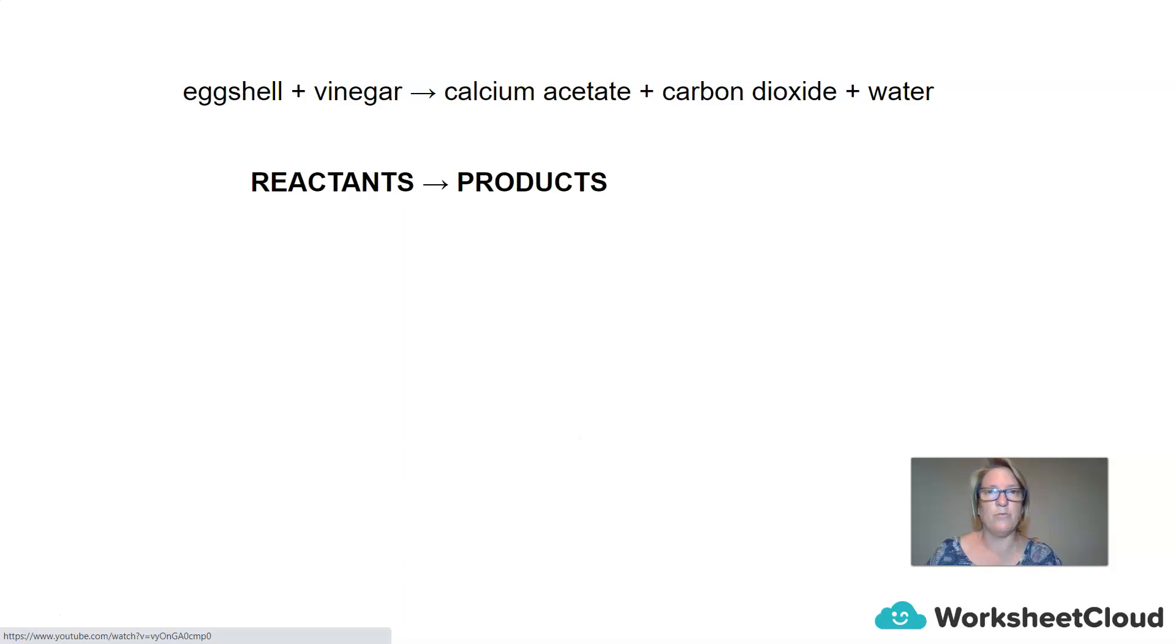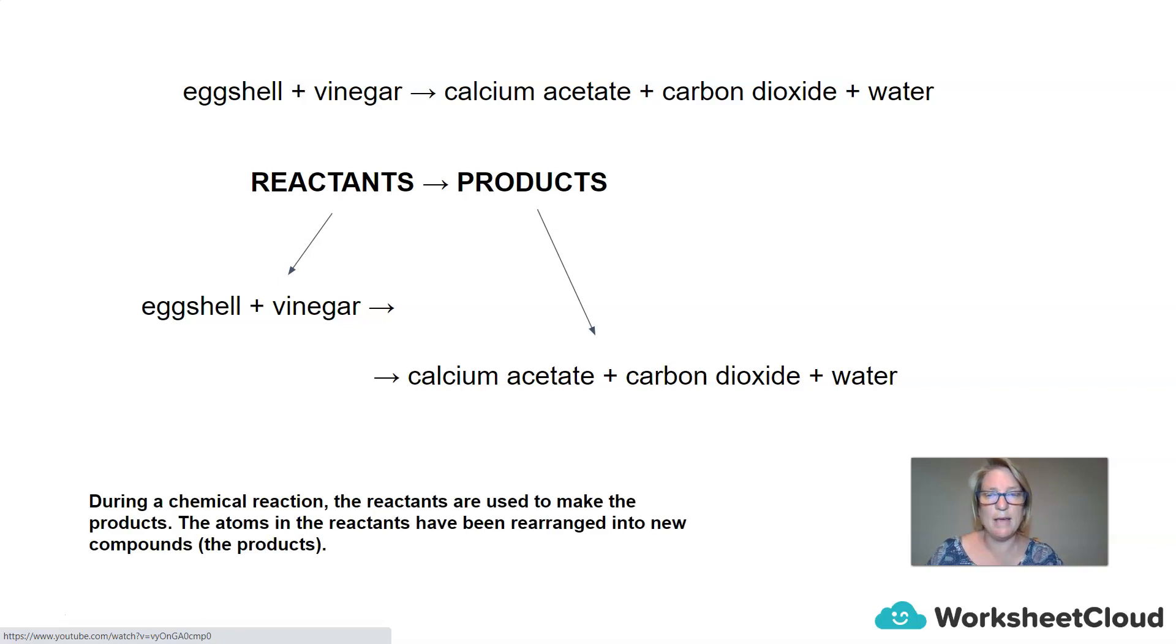So when we have a look at chemical reactions, this arrow always represents a chemical reaction. Everything to the left is known as reactants. Everything to the right is known as products. So in this equation, the egg shell and the vinegar are the reactants. The calcium acetate, the carbon dioxide, and the water are the products. During a chemical reaction, the reactants are used to make new products. So the atoms in the reactants become rearranged and they form new compounds which are the products.